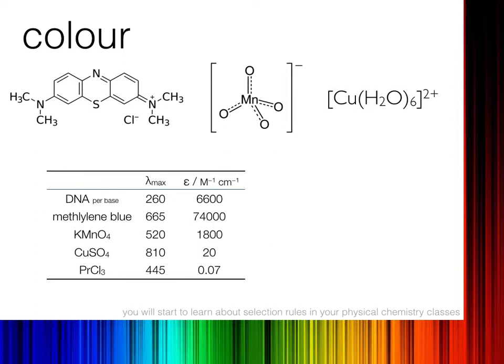This is because of selection rules: transitions cannot happen between the same type of orbital shell. In copper, the transition goes within the set of d-orbitals, which is forbidden by the selection rules. In praseodymium, the transitions go within the f-orbitals — again forbidden. My permanganate solution, however, doesn't have transitions between d-orbitals. The oxidation state of manganese here is +7, so there are no d-electrons. Instead, it has what's called a ligand-to-metal charge transfer, where an oxygen donates an electron from its shell into the manganese, absorbing a photon of light as it does so. This has no selection rule forbidding it, so we see a higher extinction coefficient. You'll learn much more about selection rules in your physical chemistry classes.